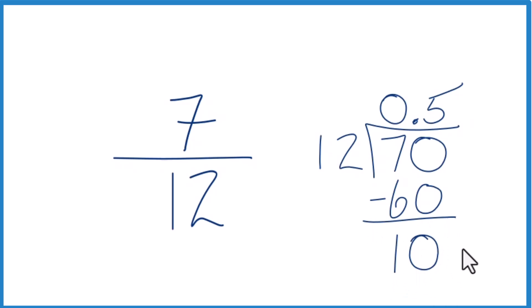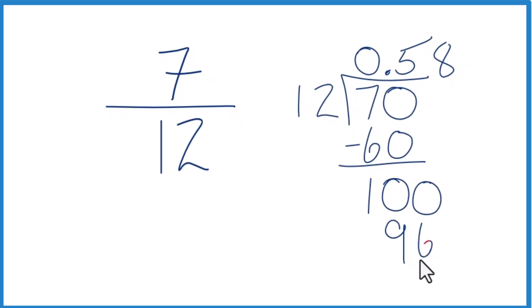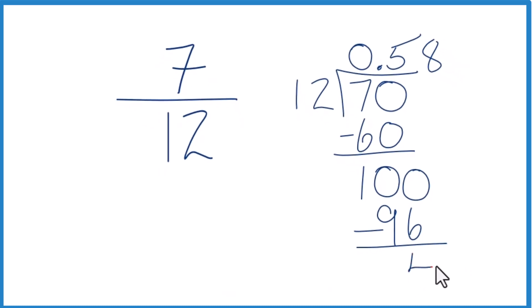12 doesn't go into 10, but we could call it 100 if we move over one. 8 times 12 is 96. We subtract and get 4.